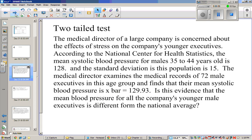A medical director of a large company is concerned about the effects of stress on the company's younger executives. According to the National Center of Health Statistics, the mean systolic blood pressure for males 35 to 44 years old is 128, and the standard deviation of this population is 15.